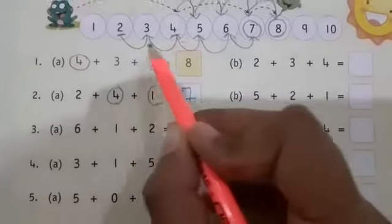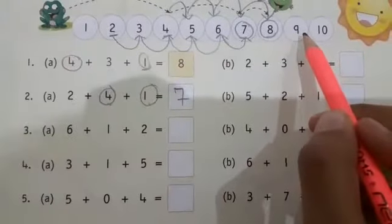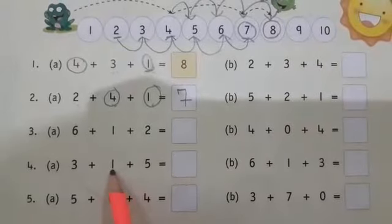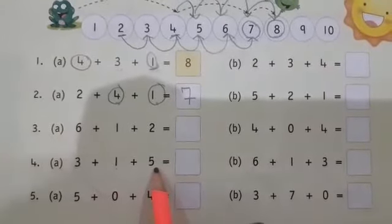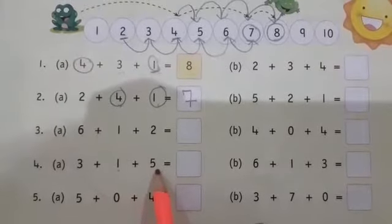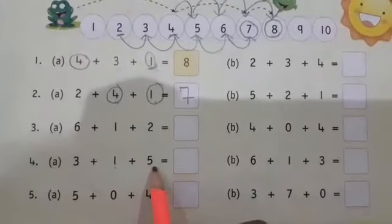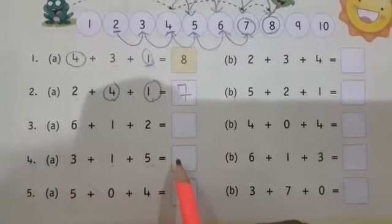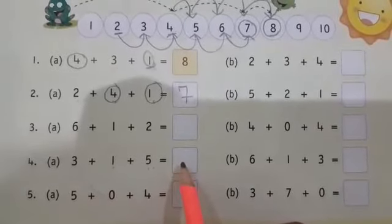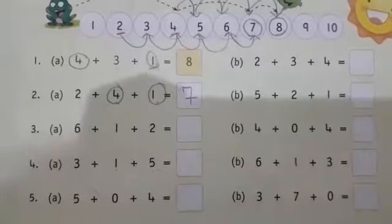Like this question: first you will find three. After that, what will you do? Jump one time, then jump five times. Then whichever number you reach, that will be your answer. So adding these three numbers, jumping will give you the answer.